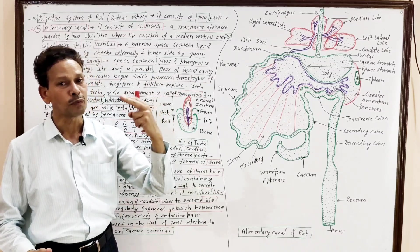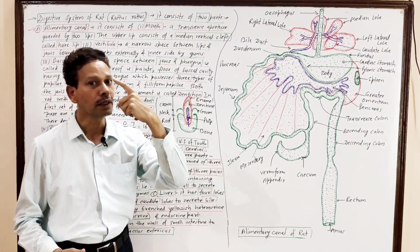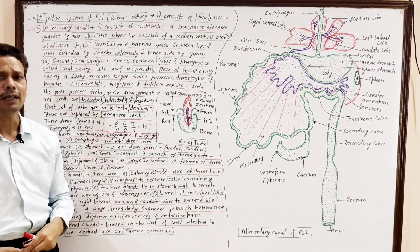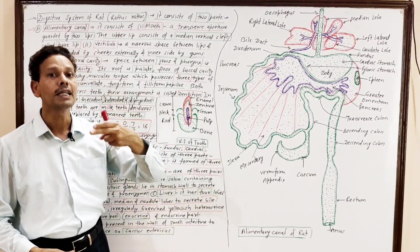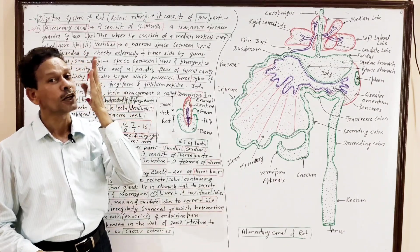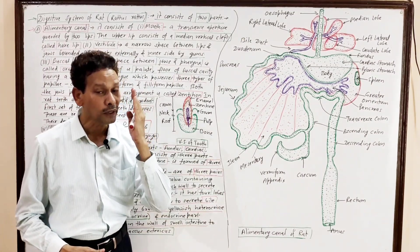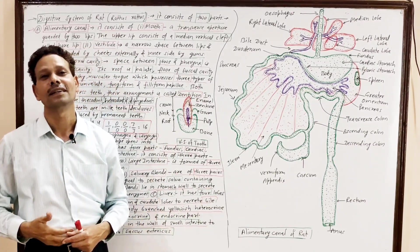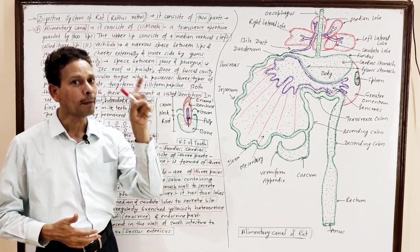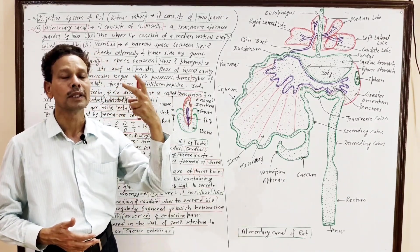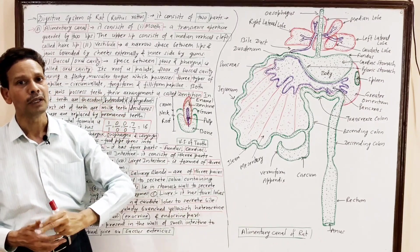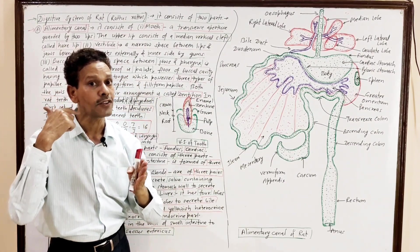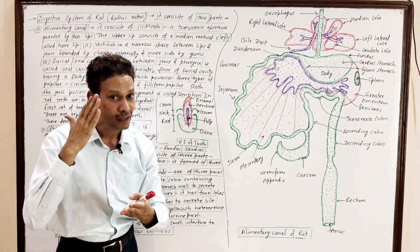Note down for short type questions: in the upper lip, a median vertical cleft is present, which is named the hair lip. The second part of the alimentary canal is the vestibule. The vestibule is a narrow space present between the lips and jaws, and it is bounded externally by cheeks and internally by gums and jaws.